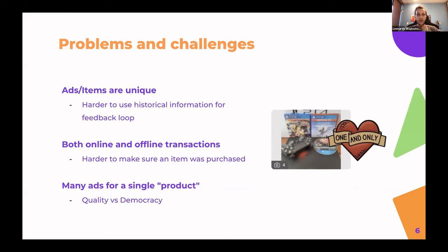If users use the offline transaction option, they don't always mark the product as sold, so it's hard to confirm whether an item was purchased. Items will expire in a month or two — they are unique and ephemeral. Another challenge is that we have many ads for a single product. If you search for PlayStation 4, you can find hundreds of them, some with better quality titles or descriptions. We want to rank higher-quality ones, but also balance that with democracy — giving every seller an equal opportunity.